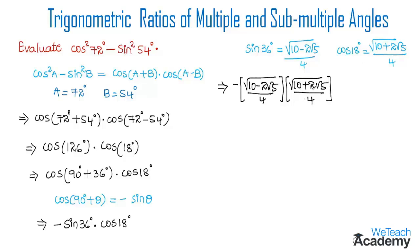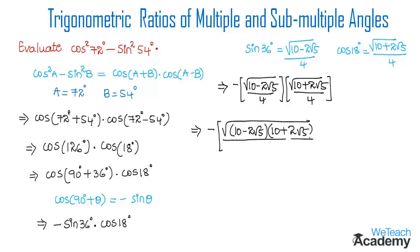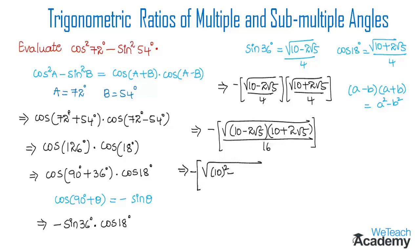Now let us multiply this. Multiplying gives -√[(10 - 2√5)(10 + 2√5)] / 16. By observing, this is in the form of (a - b)(a + b), so using the formula (a - b)(a + b) = a² - b², we write this as -√(10² - (2√5)²) / 16.